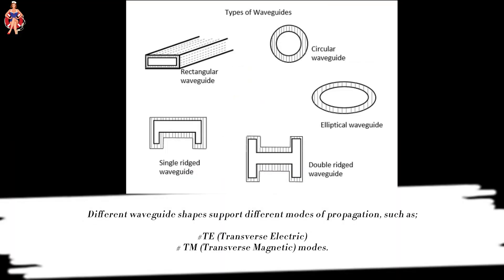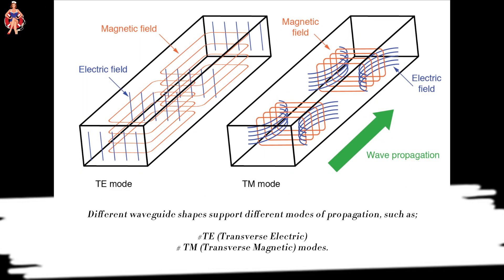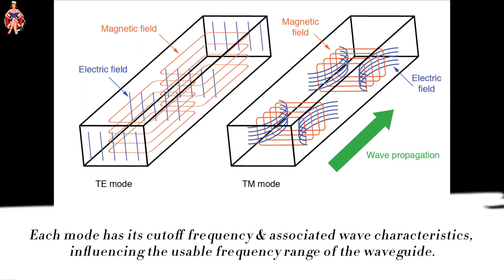Different waveguide shapes support different modes of propagation, such as TE and TM modes. Each mode has its cutoff frequency and associated wave characteristics, influencing the usable frequency range of the waveguide.